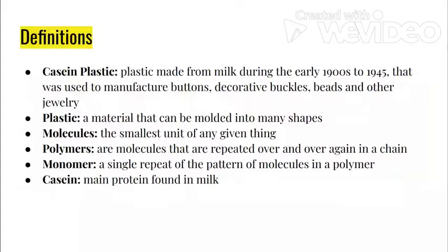Plastic is a material that can be molded into many shapes. Molecules are the smallest unit of any given thing. Polymers are molecules that are repeated over and over again in a chain. A monomer is a single repeat of the pattern of molecules in a polymer. And casein is the main protein found in milk.